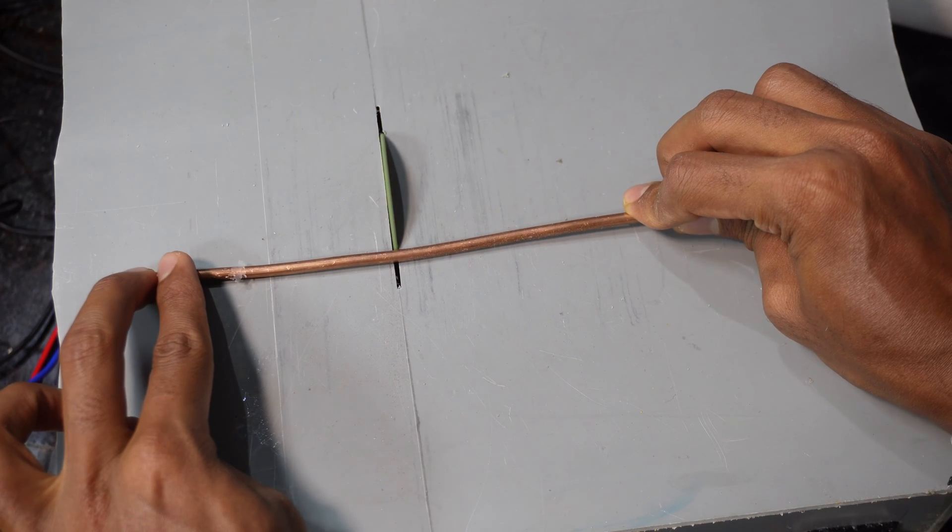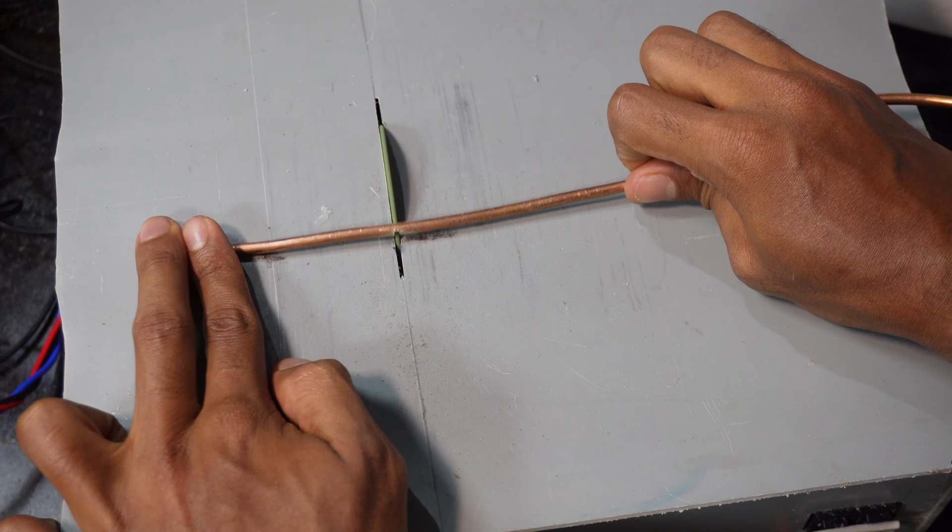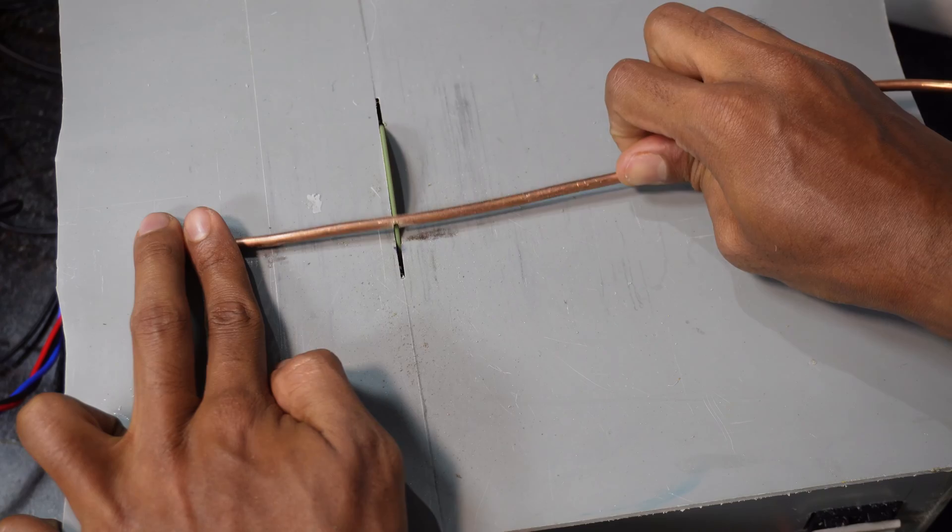Unfortunately, I lost the footage of drilling holes through the copper strip, but I'll show you the finished setup shortly. I cut two copper rods, each 5mm thick and 8cm long.